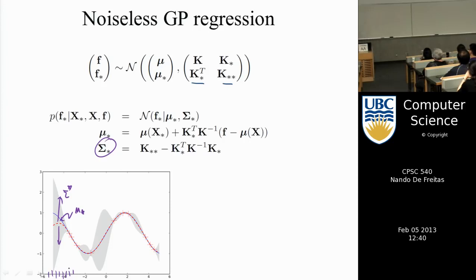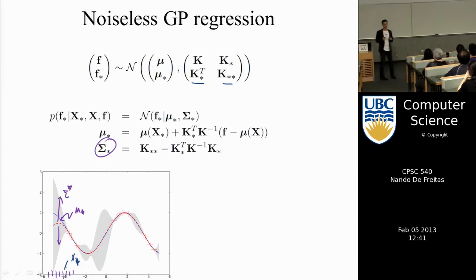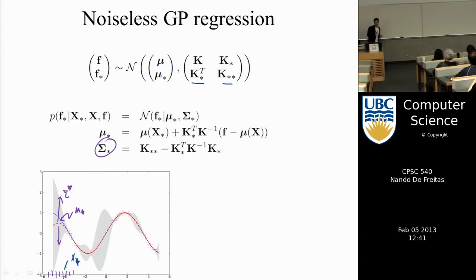I create a very fine grid of test points X_star, and for each X_star I compute the mean and the variance, then plot it. The mean is shown in blue, the true unknown function in red — the model seems to capture the world pretty well. Where the model doesn't have data, it's very uncertain, and those confidence intervals capture that as well.